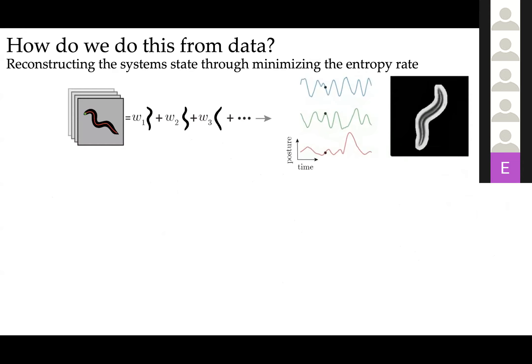The data that we will be working on is basically a collection of hundreds of worms crawling on a plate with food. What we do is basically track the posture of the worm, so we have a way of quantifying the shape of the worm as a set of numbers. That allows us to basically transform a video into a multi-dimensional timeseries, and this is going to be the dynamics that we're going to be focusing on.